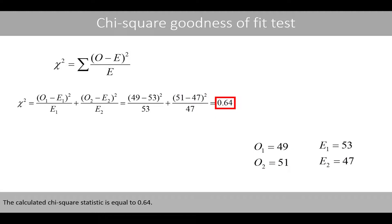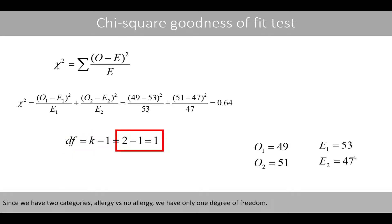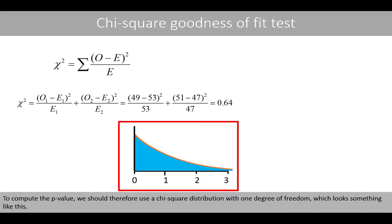The calculated chi-square statistic is equal to 0.64. The degrees of freedom of this test is the number of levels, k, of the categorical variable minus 1. Since we have two categories — allergy versus non-allergy — we have only 1 degree of freedom. To compute the p-value, we should therefore use a chi-square distribution with 1 degree of freedom, which looks something like this.